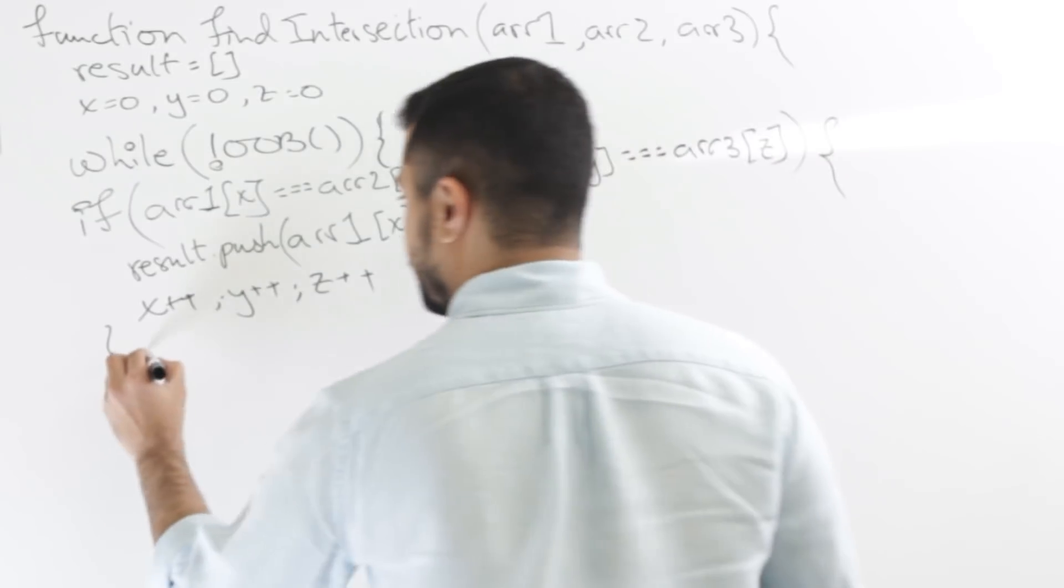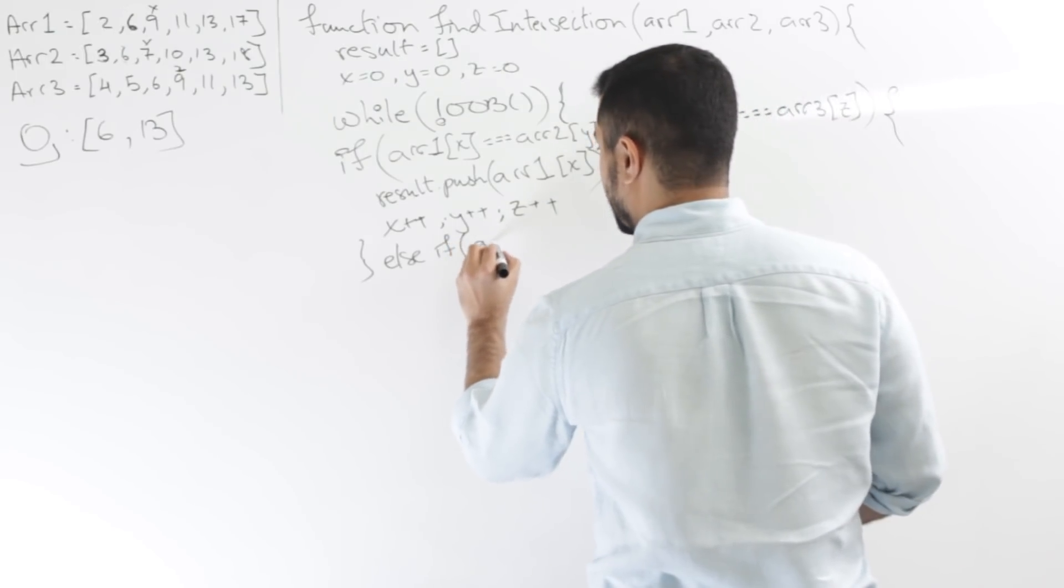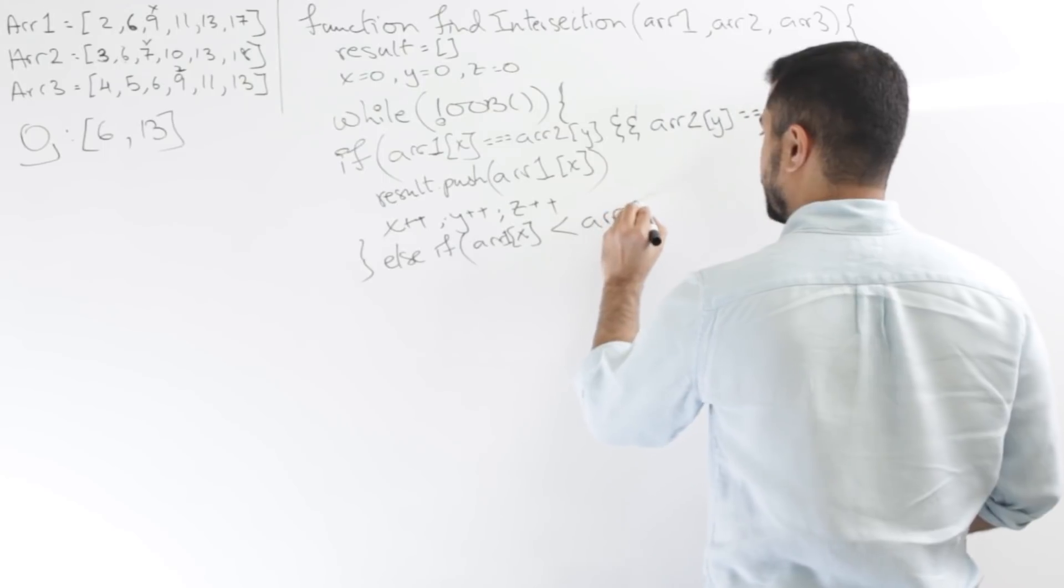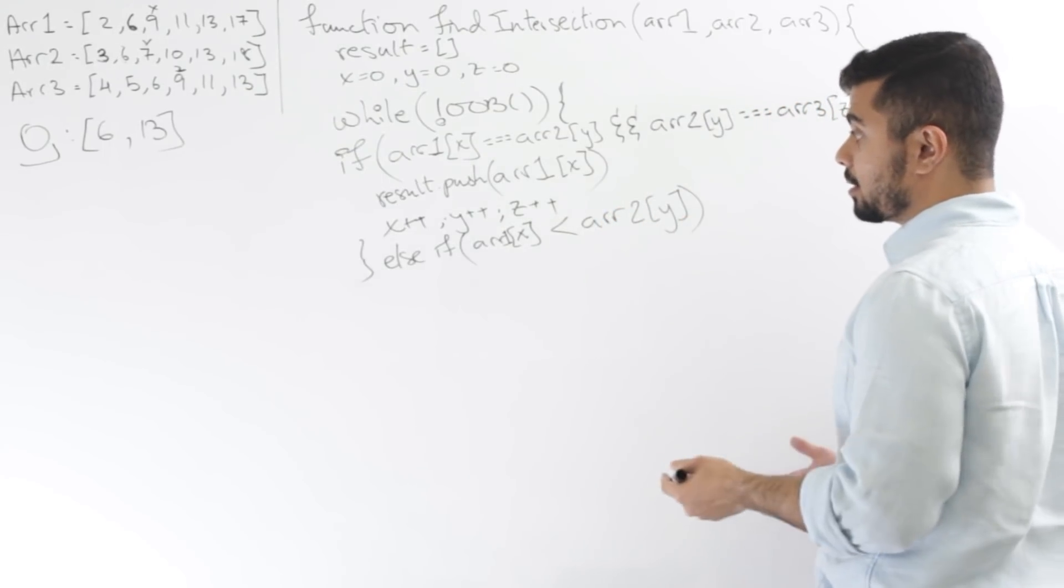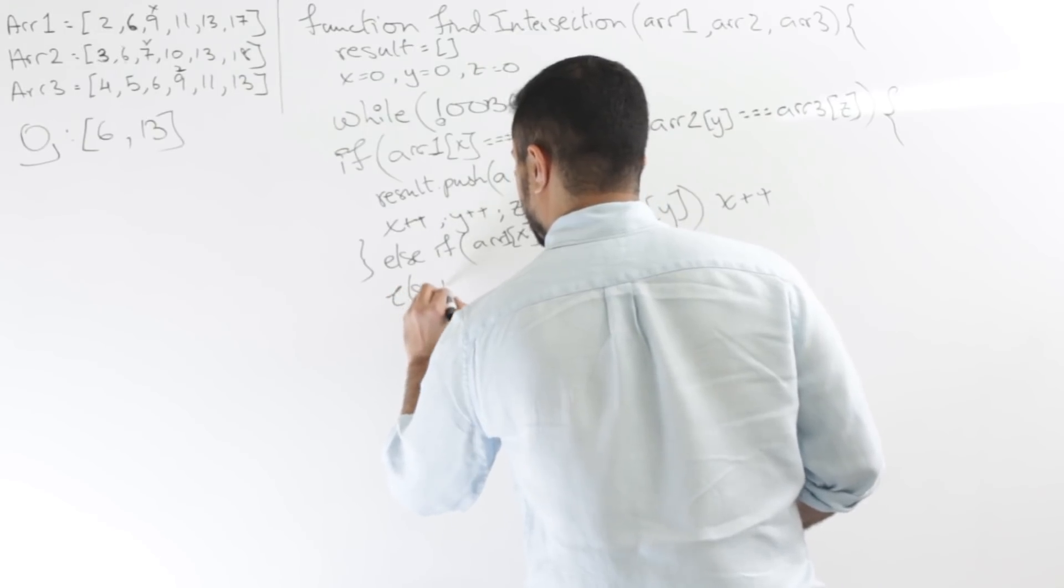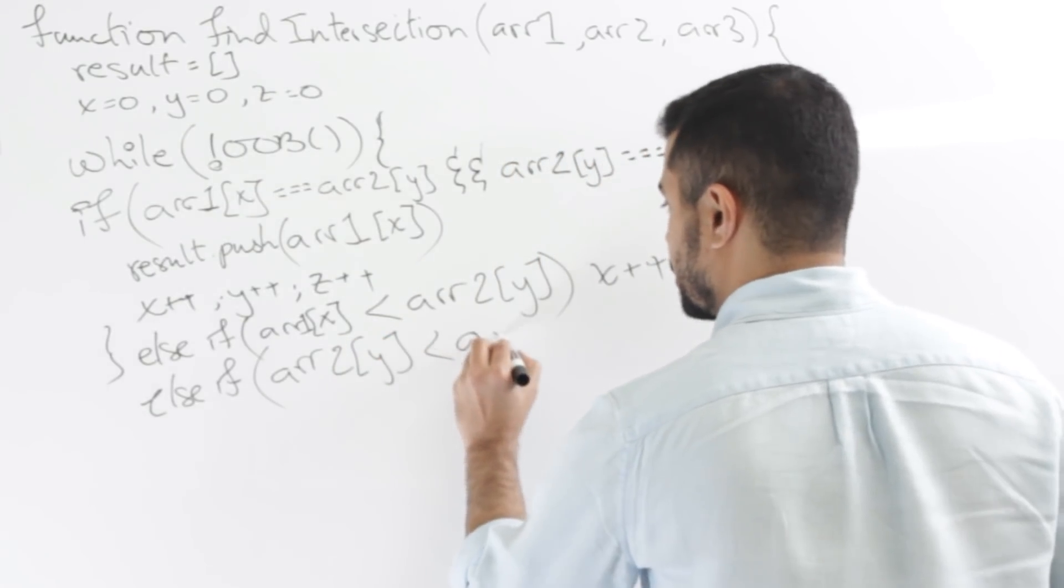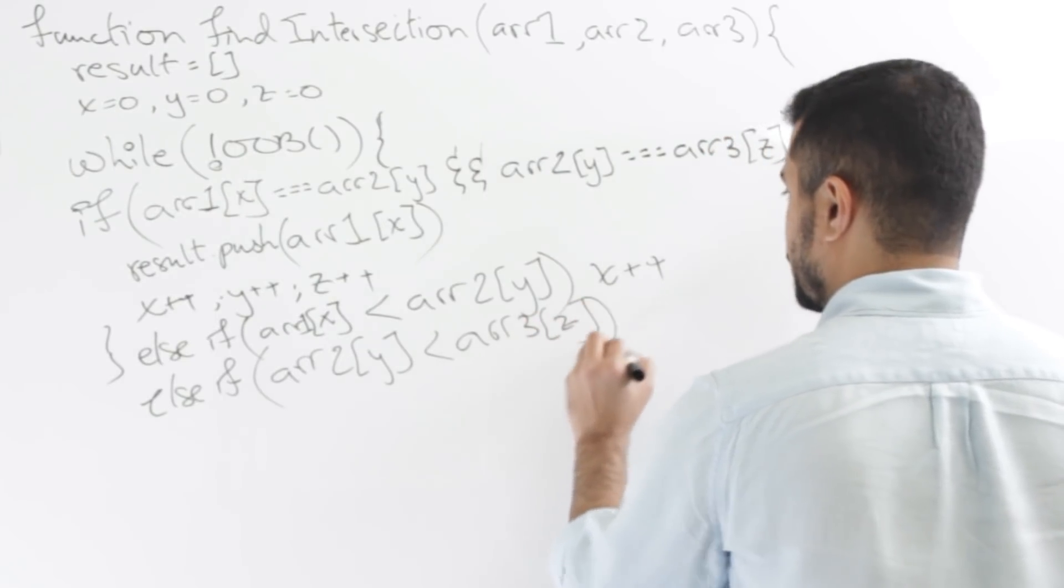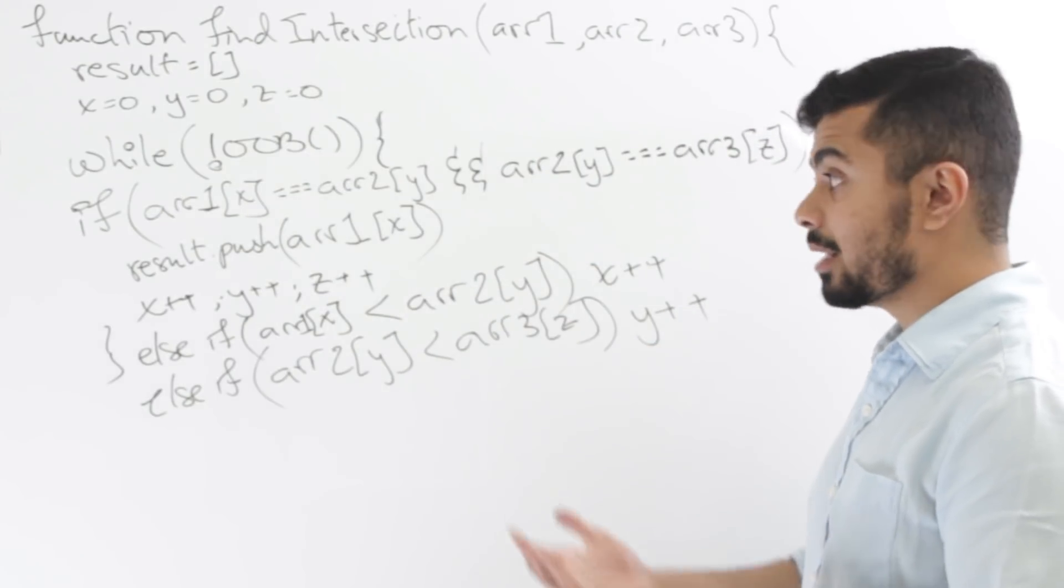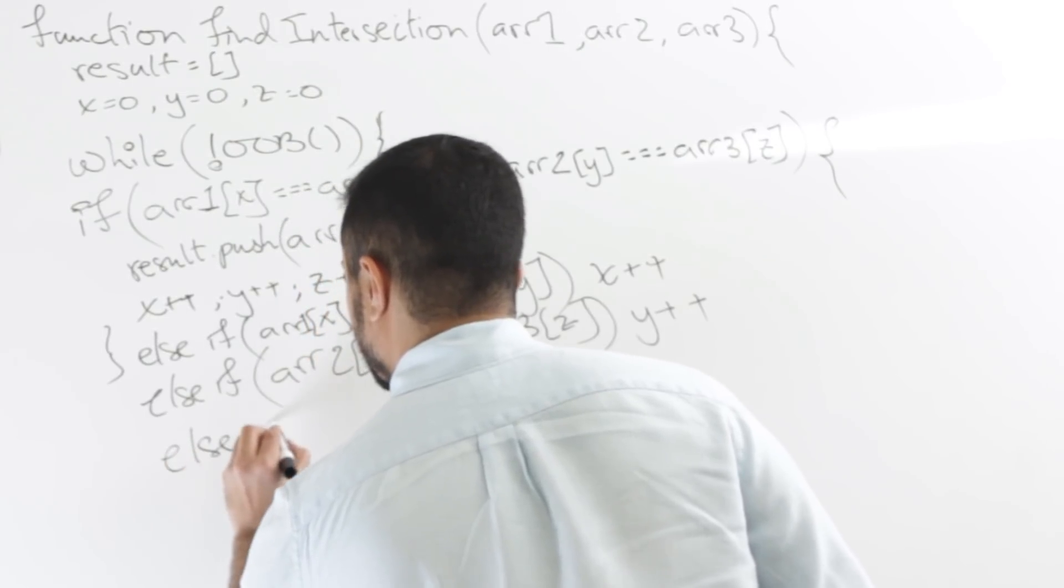Now I'll have else if X, or the value at X is less than the value at Y. So array 1[X] is less than array 2[Y]. So if this is the case, I will increment X, so X++. Else if array 2[Y] is less than, as we discussed, array 3[Z], so in this case I'll increment Y. And then if none of these are true, then the only remaining condition is that Z is less than both. The value at Z is less than both the value at X and Y. So I'll say else, Z++.